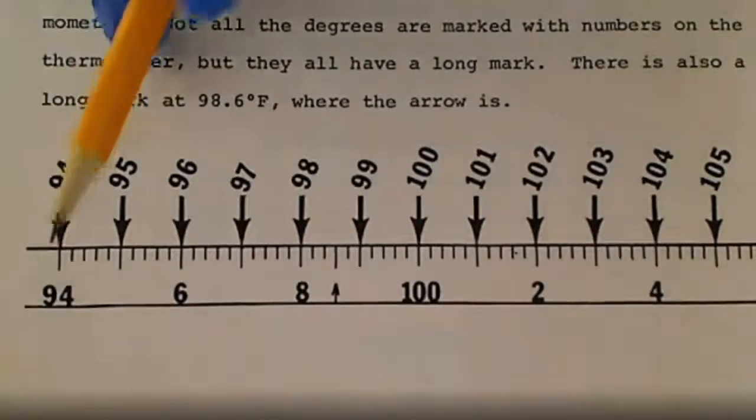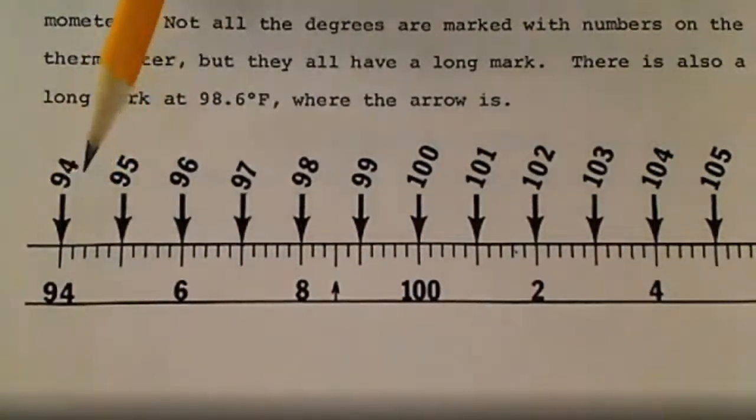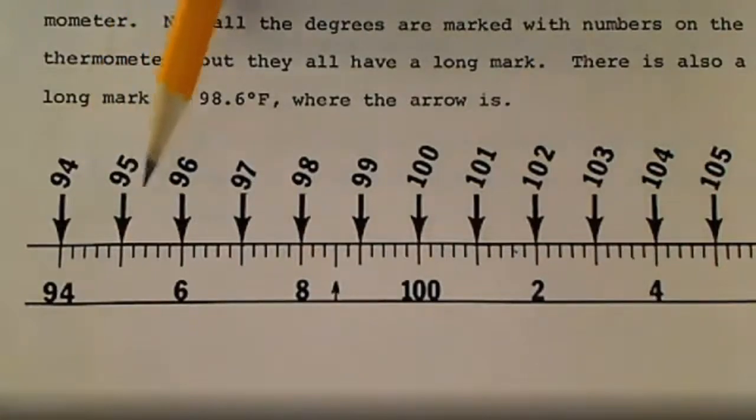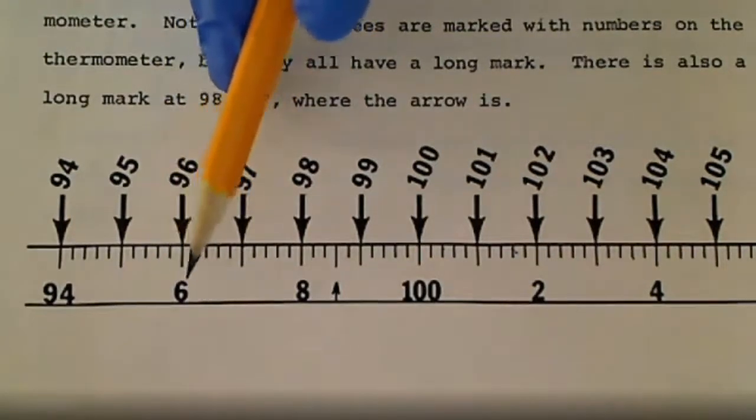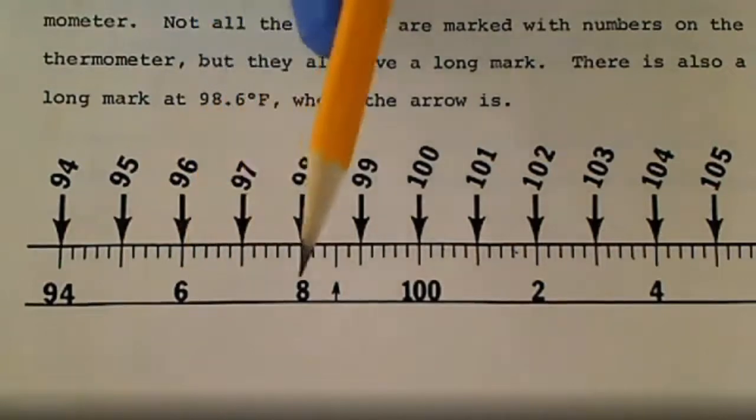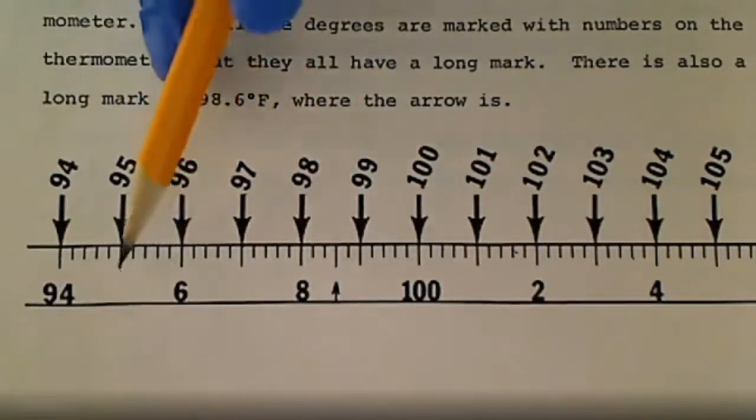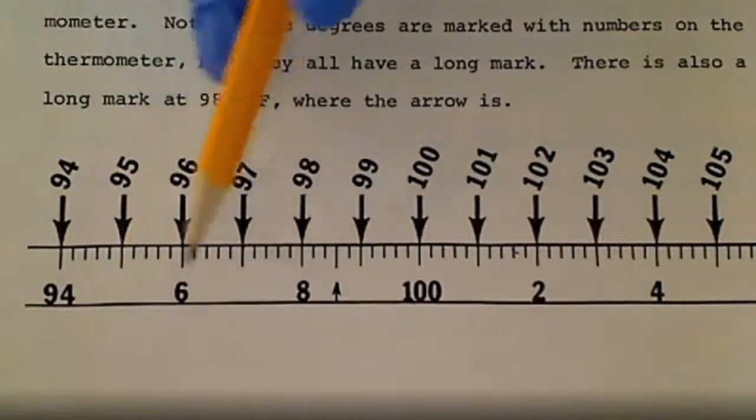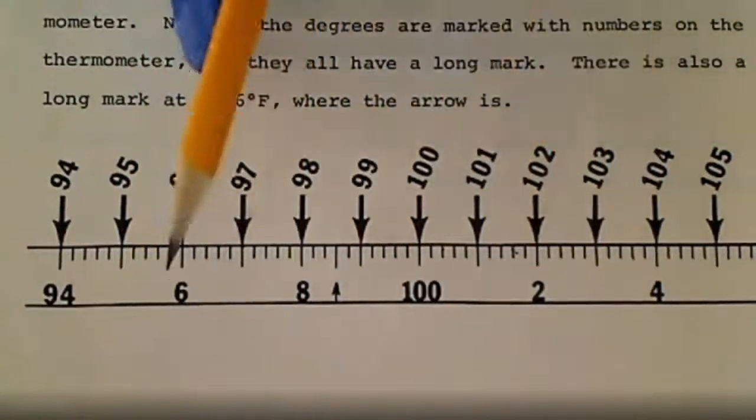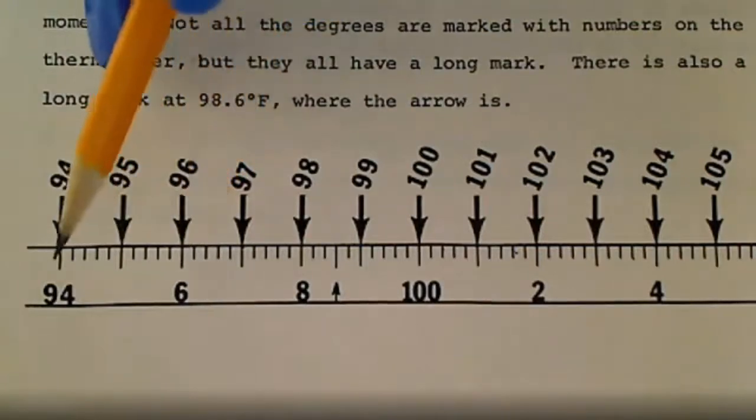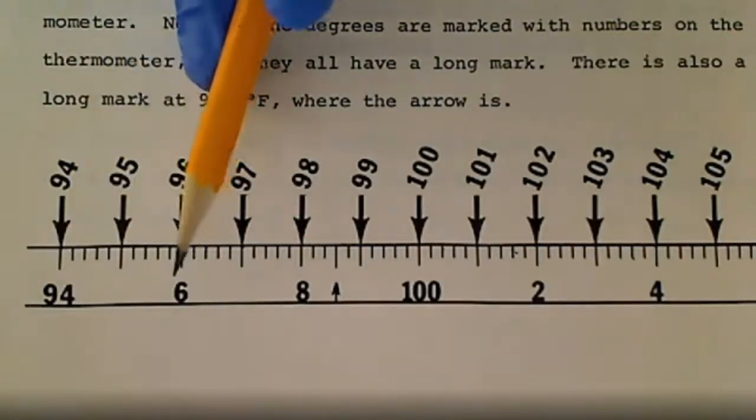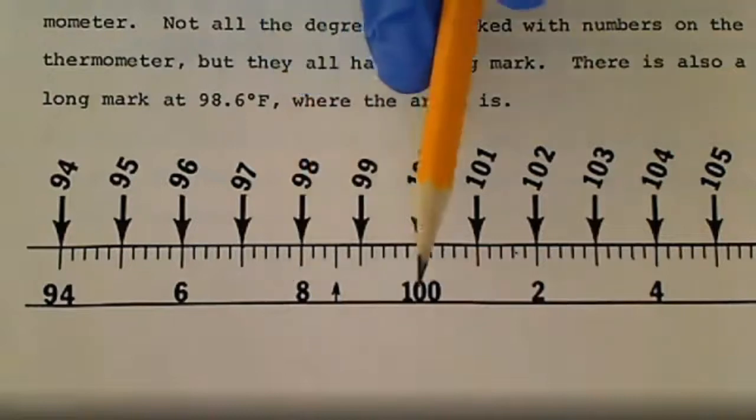Down here it starts out at 94. After 94 is 95, 96. What I want you to notice about this 96 is on the thermometer itself there's only a 6 right there. There's not a 5 for 95, it's only showing odd numbers. This is 96, this is not 6. 94, 96, 98, 100.